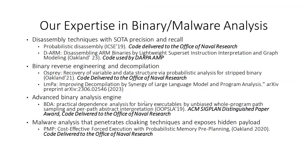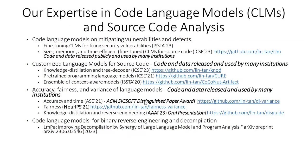Most of these projects have gone through technology transfer for agency partners. We've also done work in code language models — using large language models and transformer models to train and analyze source code, binary code, and also natural language artifacts such as documents and specifications. We use these models in different applications.